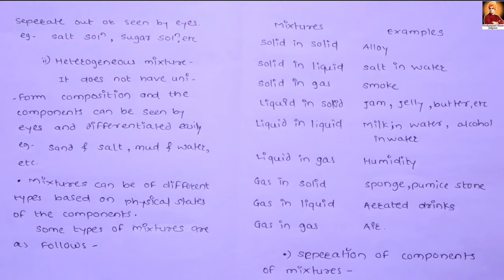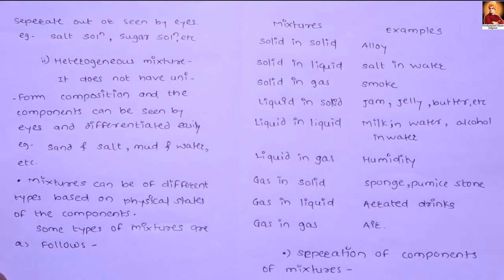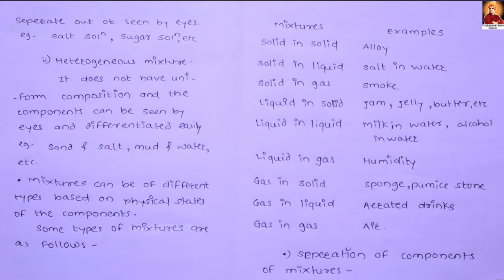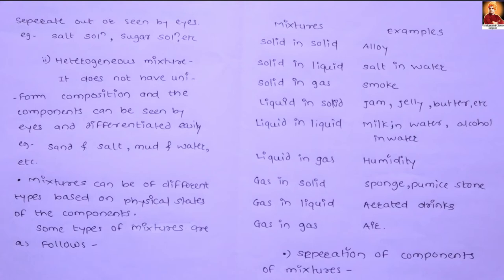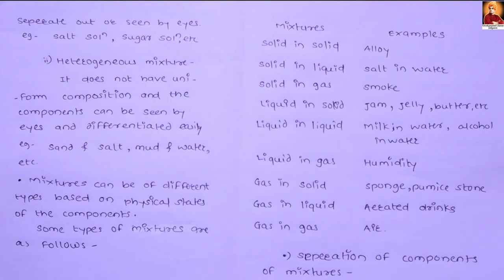An example of a homogeneous mixture is salt and sugar solution. The mixture of salt and water is uniform. Mixtures can be of different types: solid in solid, solid in liquid, and solid in gas.